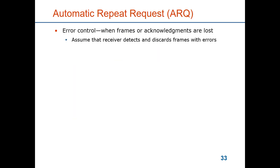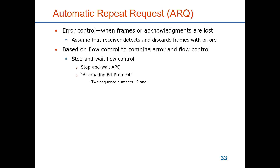For automatic repeat request ARQ, we assume the error detection presented before so that frames with errors have been discarded and are missing from the stream of frames. We base the protocols on the flow control presented earlier and now combine error control together with flow control. We start with the stop-and-wait flow control and develop that into something called stop-and-wait ARQ. It's sometimes also referred to as alternating bit protocol because since you only send one frame at a time it's enough to have a sequence number of one bit — you send frame 0 or 1 and then alternate.